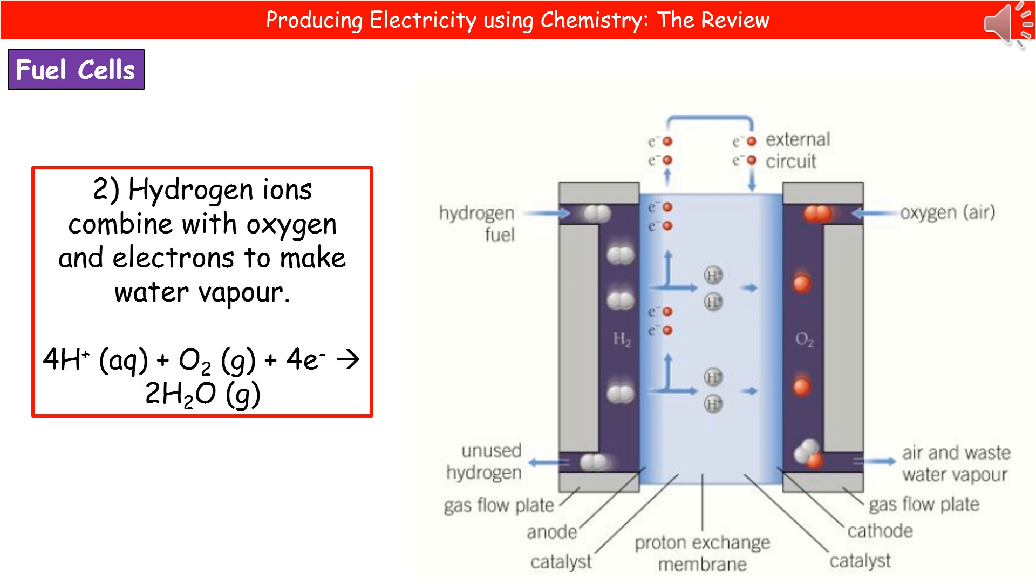Then on the right hand side our hydrogen ions combine with oxygen and electrons to make water vapour. So we've got our four hydrogen ions we generated on the left, they've gone through the proton exchange membrane, and then as they reach the right hand side where our oxygen goes in, it joins with an oxygen molecule and four electrons to make two molecules of water vapour.